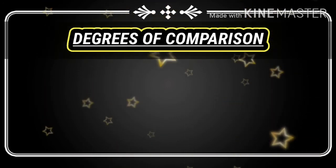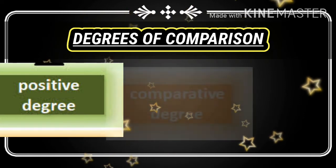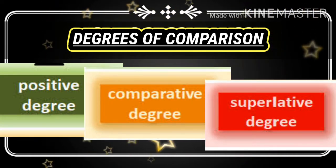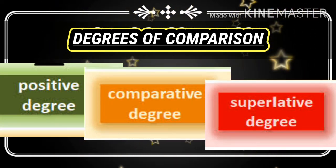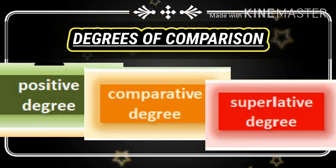There are three degrees of comparison: the first one is positive degree, the second one is comparative degree, and the third one is superlative degree.